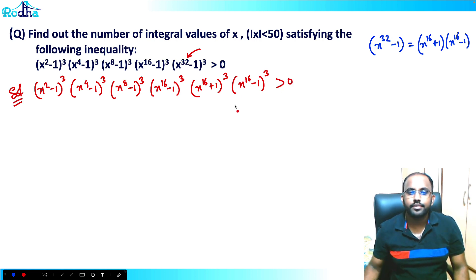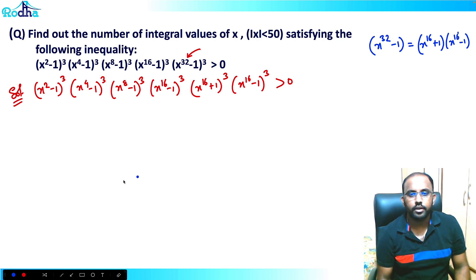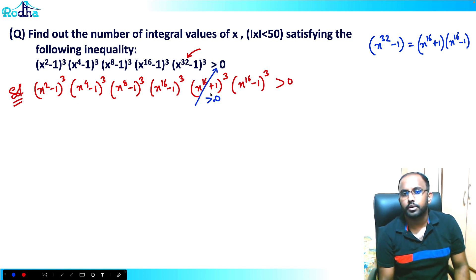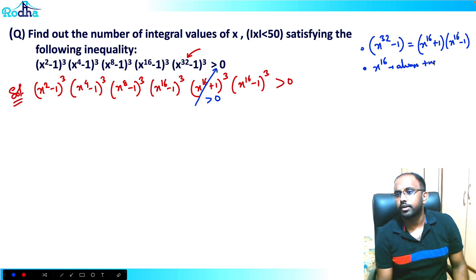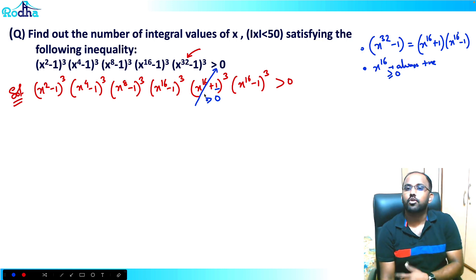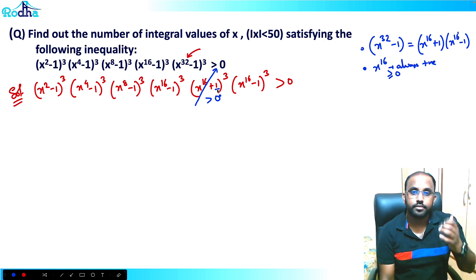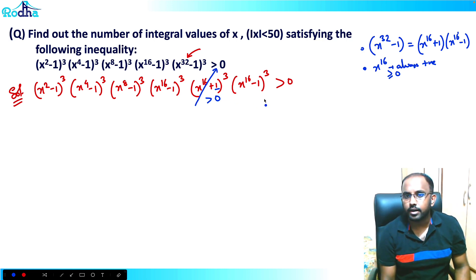Now it's easy to identify that x¹⁶ + 1 is always positive. This term is always positive because x¹⁶ is an even power, so x¹⁶ is always greater than or equal to 0. If you add 1, it becomes always positive. So I can directly divide that across the inequality.